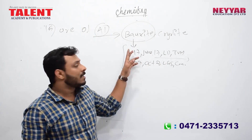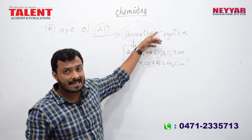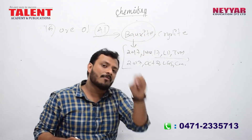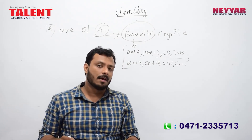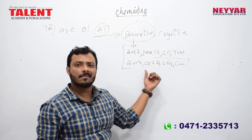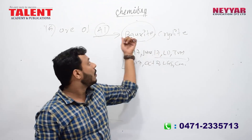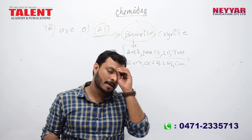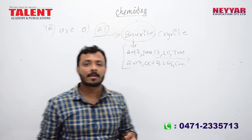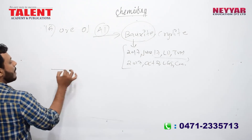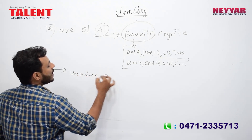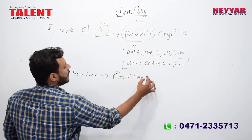The question is: what is the ore of aluminum? The answer is bauxite. Bauxite is also used to call the ore of aluminum. One thing about aluminum is that its ore is bauxite.